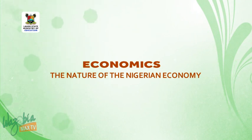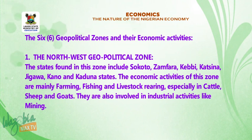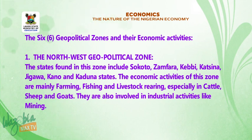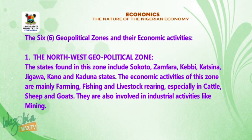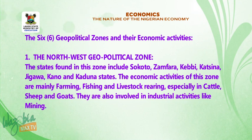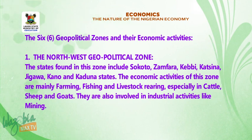Welcome back to the last session of today's class. The six geopolitical zones and their economic activities. Number one, the north-west geopolitical zone. The states found in this zone include Sokoto, Zamfara, Kebbi, Katsina, Jigawa, Kano, and Kaduna State. The economic activities of this zone are mainly farming, fishing, and livestock rearing, especially cattle, sheep, and goats. They are also involved in industrial activities like mining.